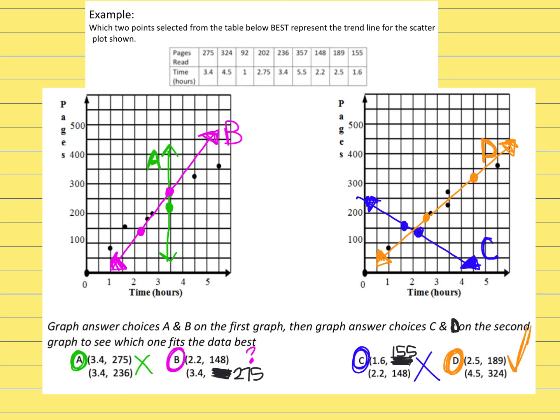So labeling this answer choice D. This is definitely the best line for the data because all my dots, when I look at them and I compare how far away each one of these dots are from the line I just drew, they're all super close. So best answer definitely is D. Those two points make the best line to describe the data in the graph.